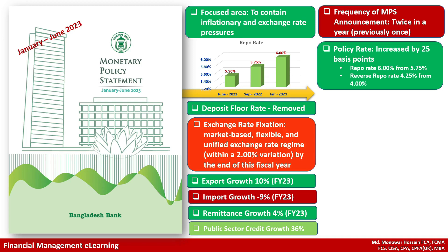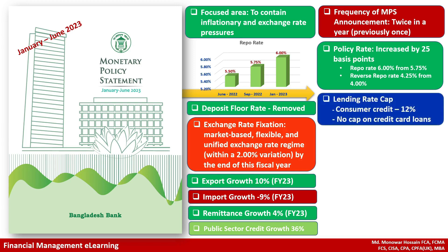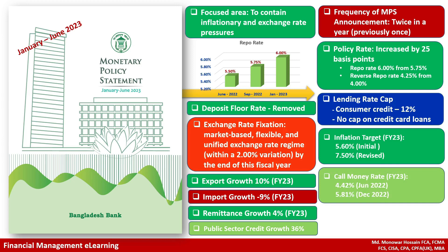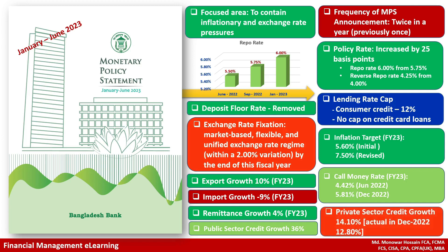The reverse repo rate is 4.25 percent. The lending rate cap on consumer credit is 12 percent, with no cap on credit card loans. The inflation target was initially 5.6 percent and was revised to 7.5 percent. Call money rates were 4.42 percent in June 2022 and 5.81 percent in December 2022.